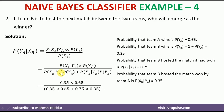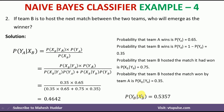Substituting all the values, we get the probability that A won given B hosted as 0.4642. The probability that B won given B hosted is 0.5357. Comparing the two, since P(YB | XB) = 0.5357 is greater than P(YA | XB) = 0.4642, we can say that team B will emerge as the winner in this case.